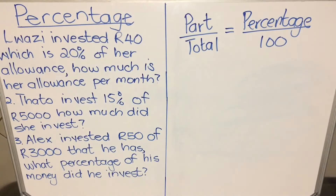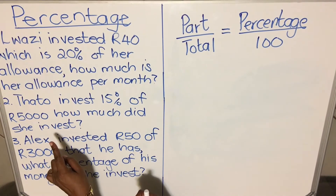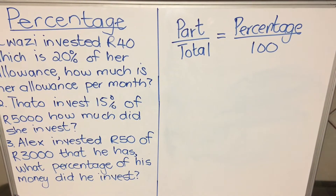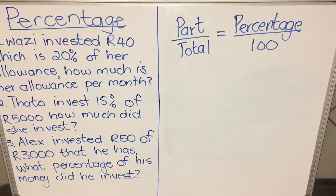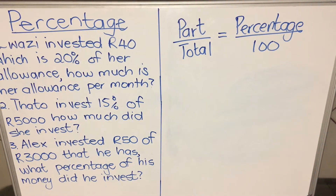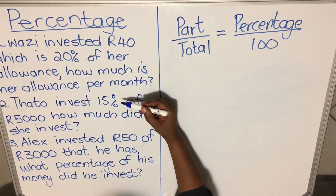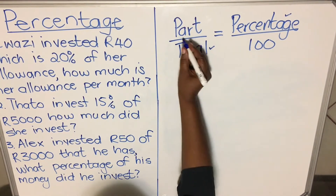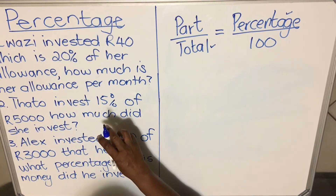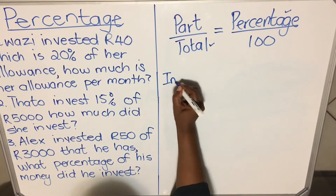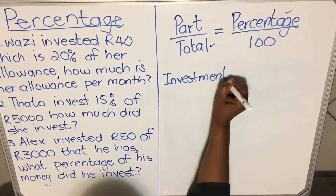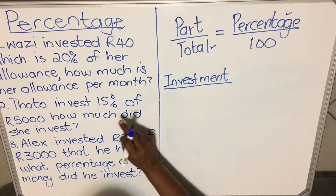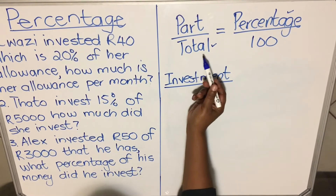Let's look at the second example: Tato invests 15% of 5000 — how much did she invest? Most learners can do this without the formula, but I'm going to use the formula to show you how. The 15% is the percentage and the 5000 is the total amount, so we want to find the part — which in this question is the investment. You don't write 'part' because whoever is marking your script needs to see what was asked, which is the investment.